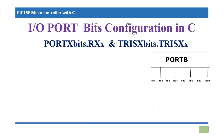In the last tutorial, we covered how one can configure a complete port for input and output purpose. For example, we saw how one can configure Port B as an input port or output port. However, this situation is not true for every application. There are various applications in which we need only a single pin or two to three pins for input and output purpose, so there is quite a possibility that one needs to configure a single bit of a port as input or output.